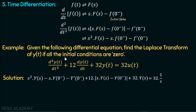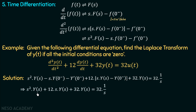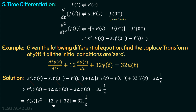We are given that all the initial conditions are zero, so all initial value factors — y(0⁻), y′(0⁻) — become zero. This gives us s²·Y(s) + 12·s·Y(s) + 32·Y(s) = 32/s. Taking Y(s) as common on the left hand side, we get Y(s)·(s² + 12s + 32) = 32/s. Transposing, Y(s) = 32 / [s·(s² + 12s + 32)].